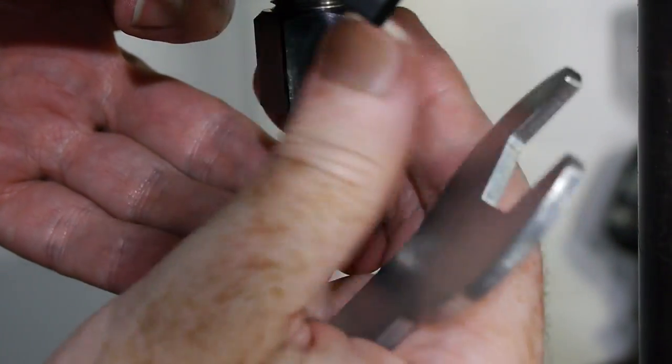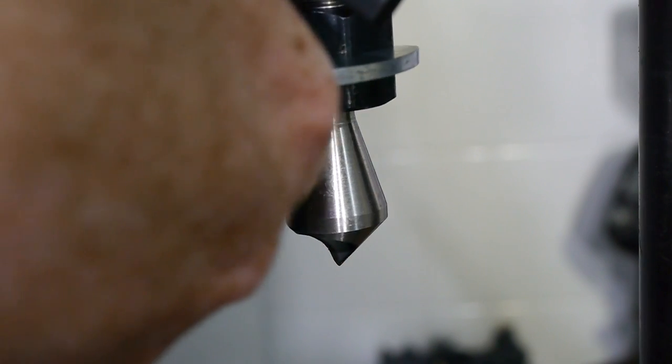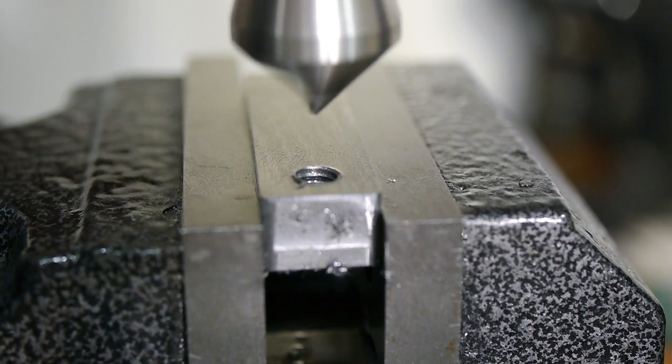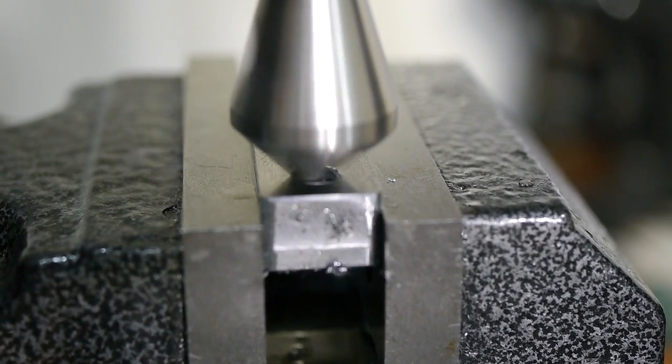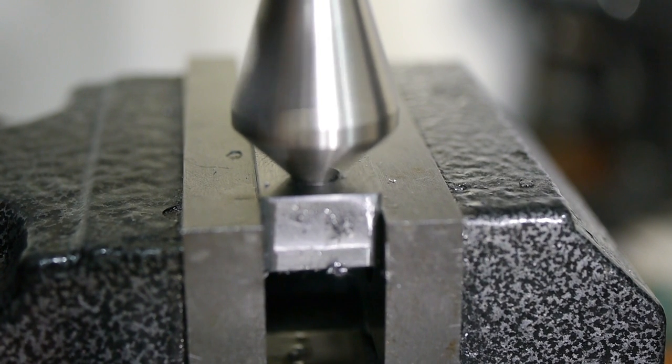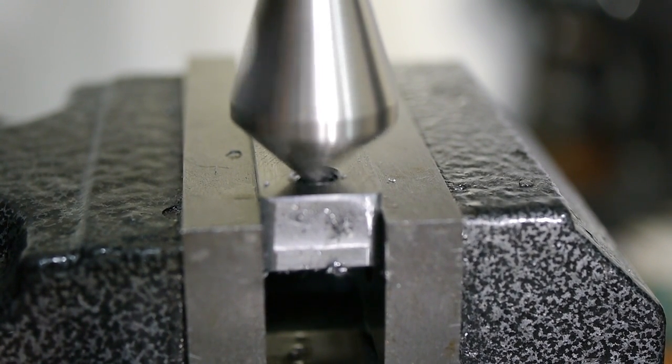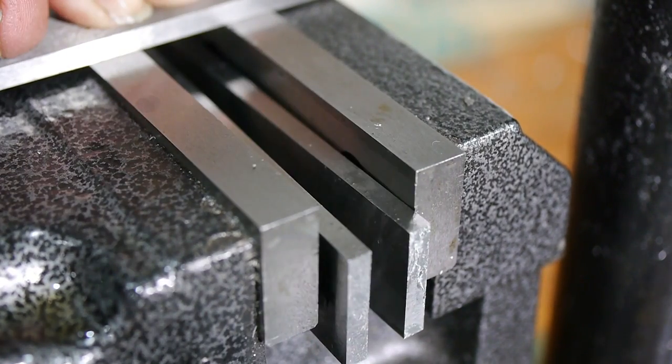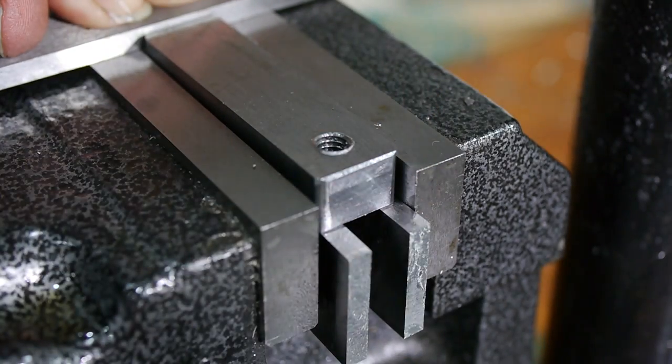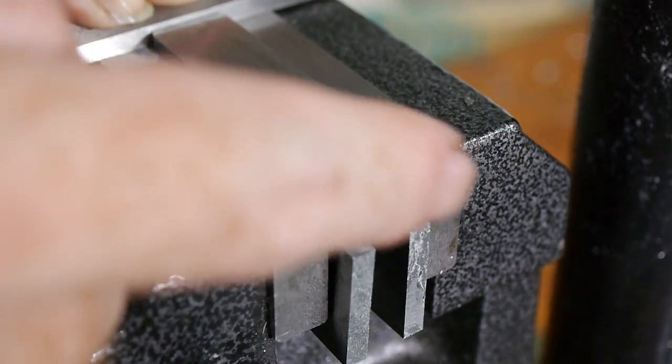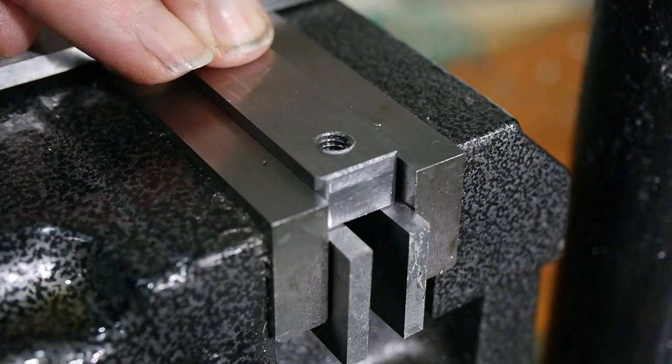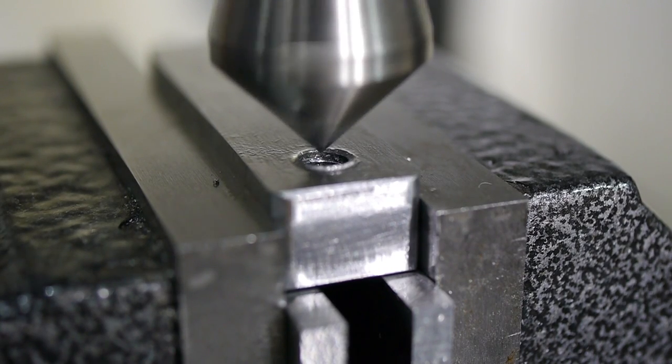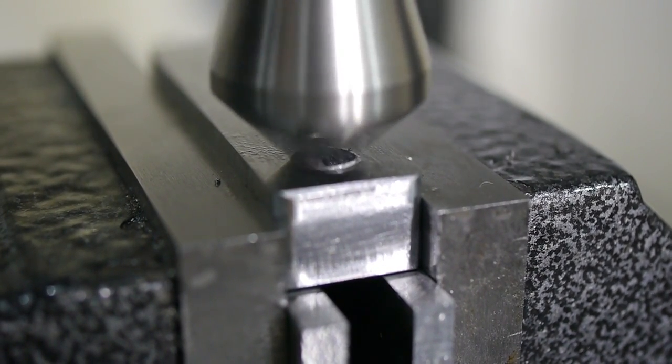To clean up the burrs from the tapping I used this countersink tool. It would have been really useful to have a vise stop to keep the part in place when I turned it over. I didn't get the hole exactly on center line, but close enough.